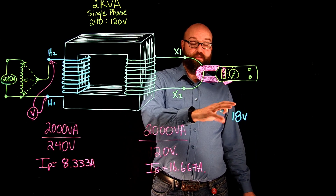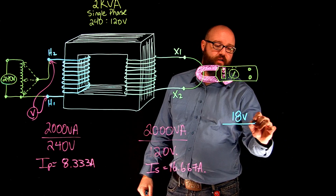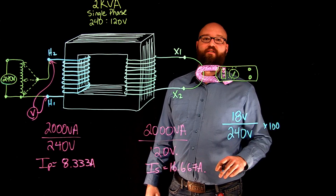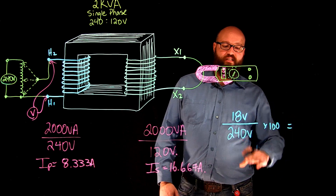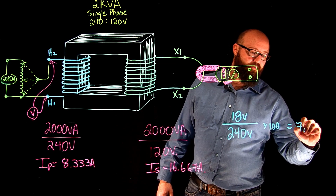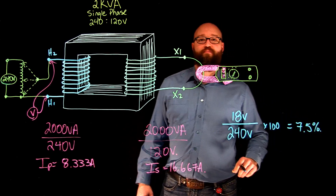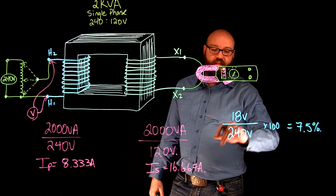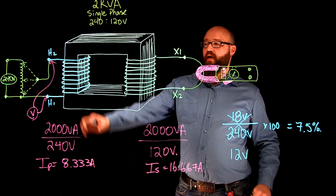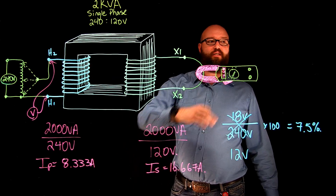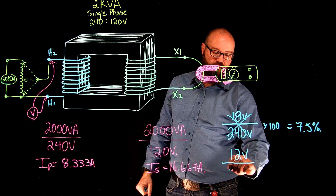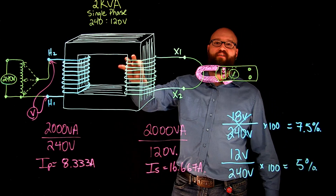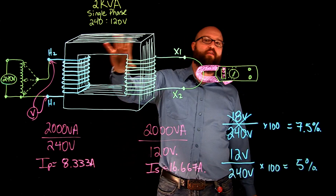That right there is my impedance voltage. If we take the impedance voltage and divide it by the primary rated voltage of 240 volts and multiply by 100, that gives us the percent impedance of this transformer. In this case, 18 divided by 240 times 100 gives us 7.5%. Alternatively, if we dial it up and hit 12 volts when we see 16.67 amps, then 12 divided by 240 times 100 gives us 5% impedance — which is what we would see on the nameplate.